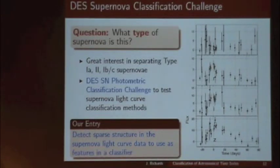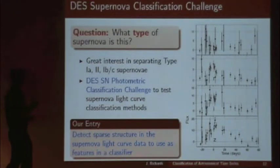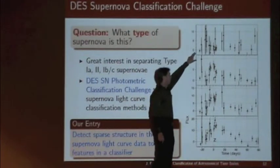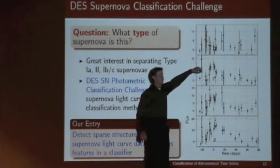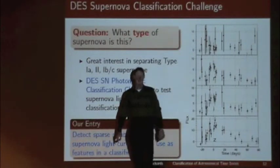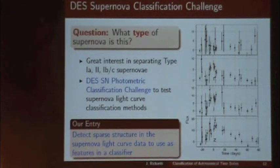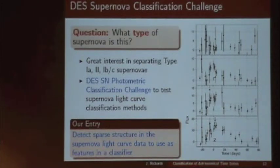People are typically most concerned with finding type 1A supernovae because that tells us a lot about the cosmology of the universe. The data here are simultaneous time series in four different photometric bands — the data from a supernova isn't just a single light curve but a four-dimensional time series. Our entry to this challenge was to try to uncover some sparse structure in these time series to do classification on, using a semi-supervised approach.